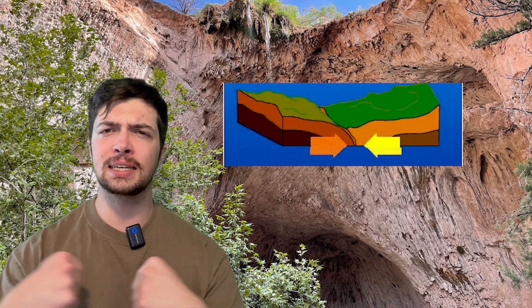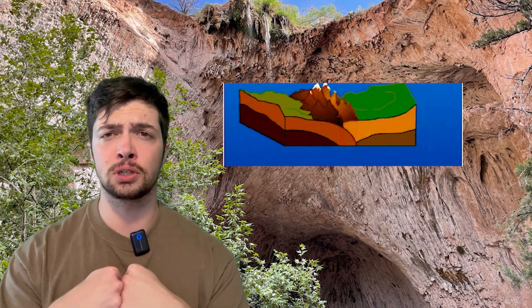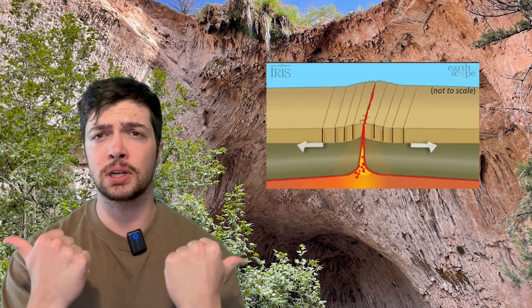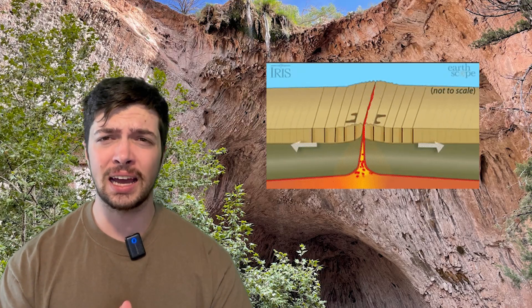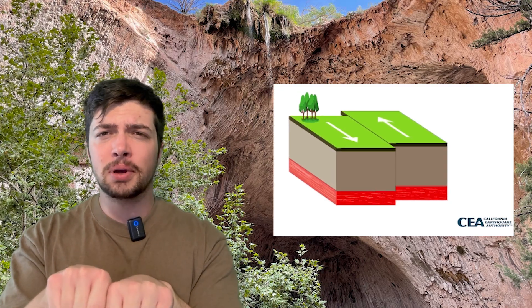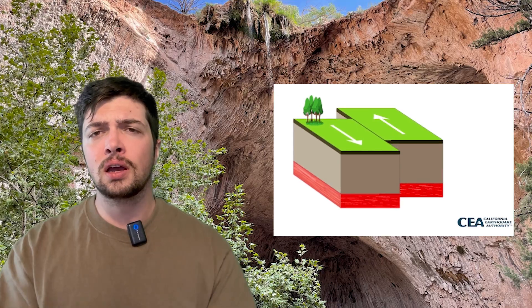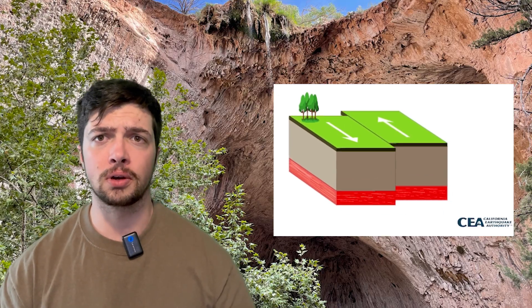Two plates coming together is known as a convergent boundary. Two plates splitting apart is known as a divergent boundary, and two plates sliding past each other is known as a transform boundary.